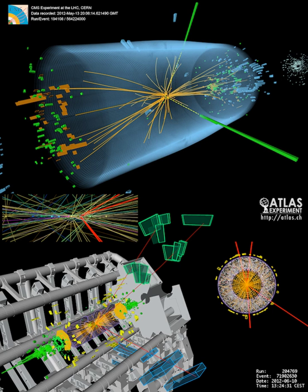Top fusion is by far the least likely process by two orders of magnitude. This process involves two colliding gluons, which each decay into a heavy quark-antiquark pair. A quark and antiquark from each pair can then combine to form a Higgs particle.